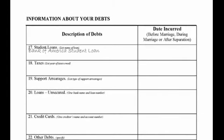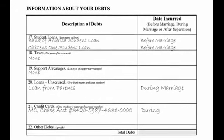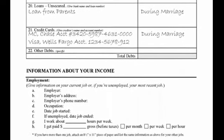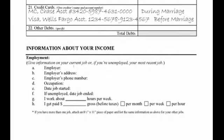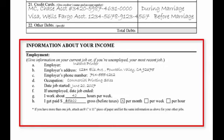The same rule applies for debts — list all debts even if you think they are all yours or all your spouse's. You must not leave anything out. Give us the information on your current job, or if you are unemployed, fill in the information for your most recent job. If you have more than one job, include the same information (A through H) in the blank space below.